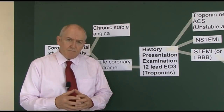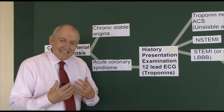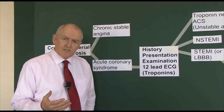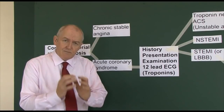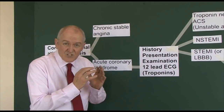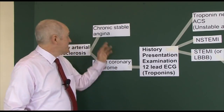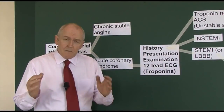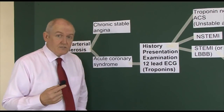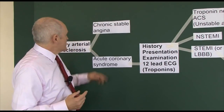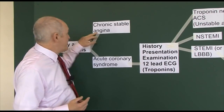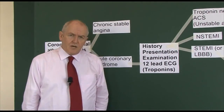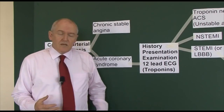What happens here is whenever the metabolic demand of the myocardium exceeds the ability of the coronary arterial system to deliver blood and therefore oxygen to the metabolising myocardium, there's going to be an imbalance between the oxygen demand and the oxygen supply of the myocardium. We get the features of angina pectoris whenever this imbalance occurs, and patients can have chronic stable angina for years or even decades. The pain comes on with effort.